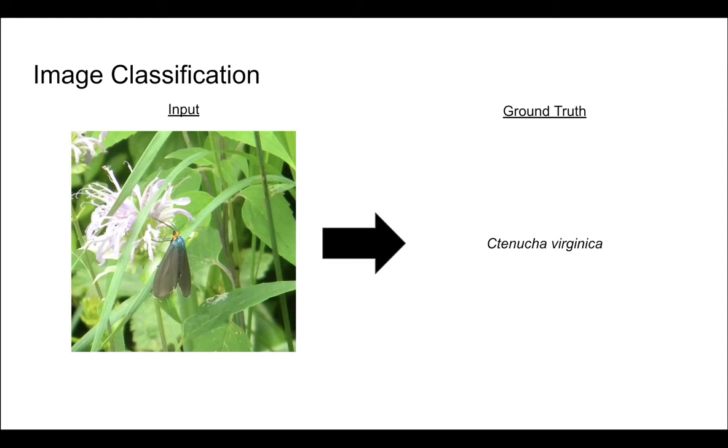Methods for weakly supervised object localization differ primarily in how they train the image classifier, but there is a more fundamental question which has received little attention. Which labels should we train on?